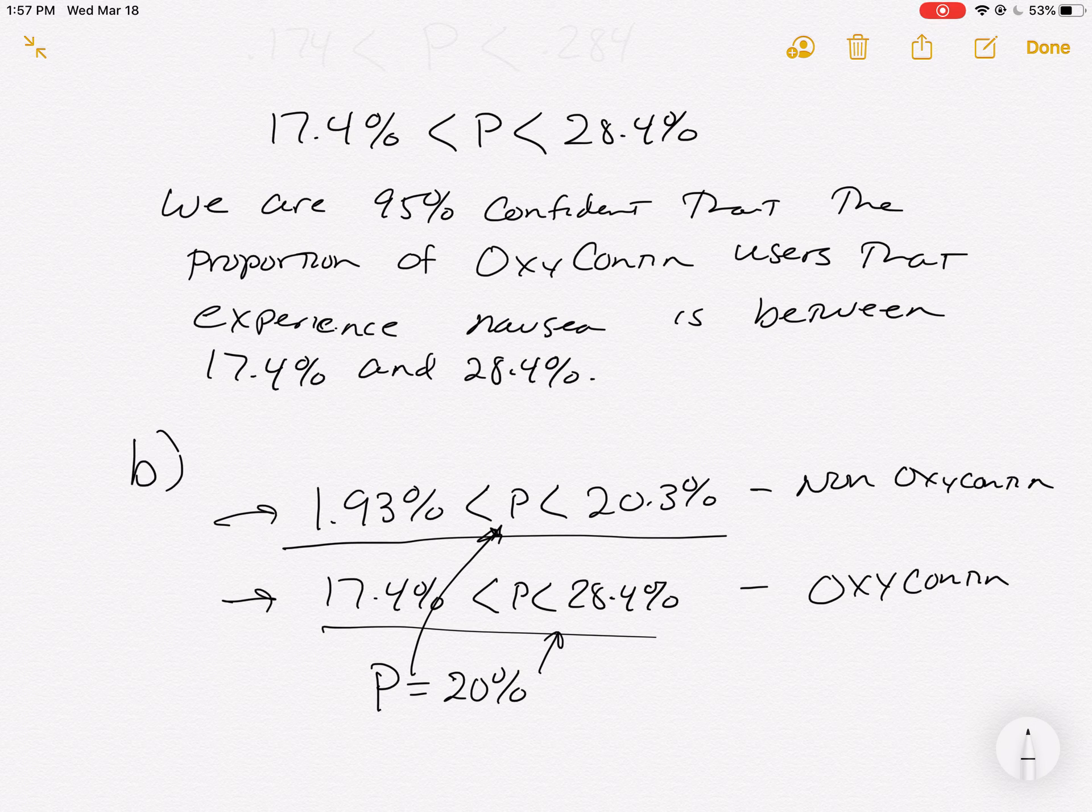We could only say that if the OxyContin nausea rate was definitely going to be above the non-OxyContin users. But because there's some overlap, they're going to say it's possible that the OxyContin treatment group is experiencing the nausea at the same rate as the non-OxyContin.